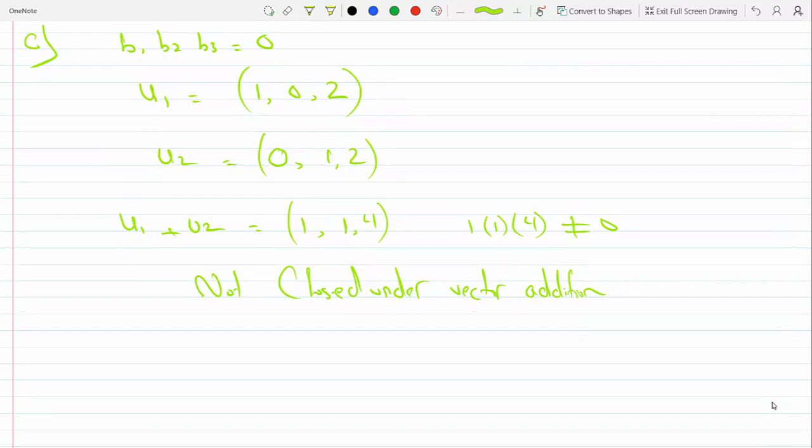Therefore, this is not closed under vector addition because it gave me a vector that is not in this plane, that's not in this set. So not closed, since B1, B2, B3 does not equal 0. Not closed under vector addition. Therefore, the vectors with B1, B2, B3 equals 0, not subspace of R³.